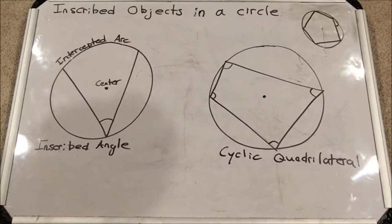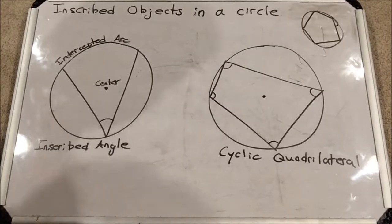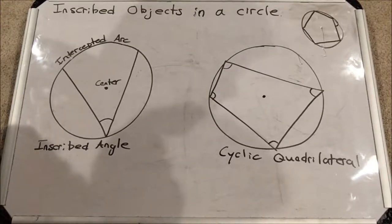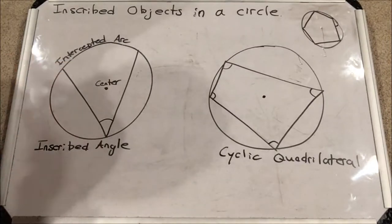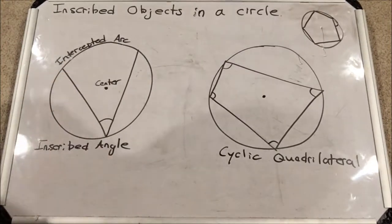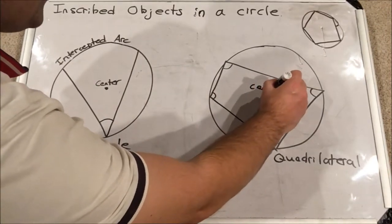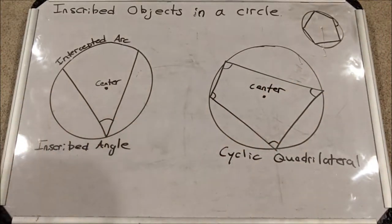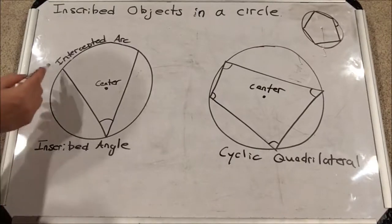So when something's inscribed, that means it's completely inside the circle. A very important thing to understand are inscribed angles. I have an example of that right here. Notice that the center of the circle is not really involved in the situation when we are discussing inscribed objects, not usually. And so here I have an inscribed angle.